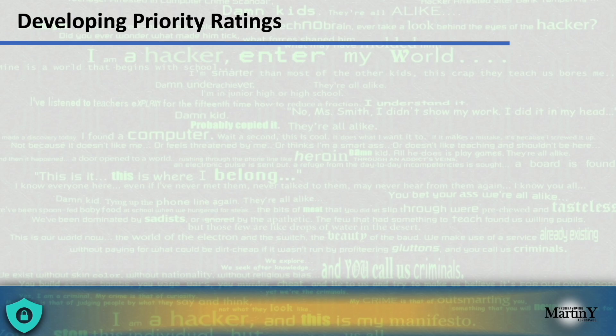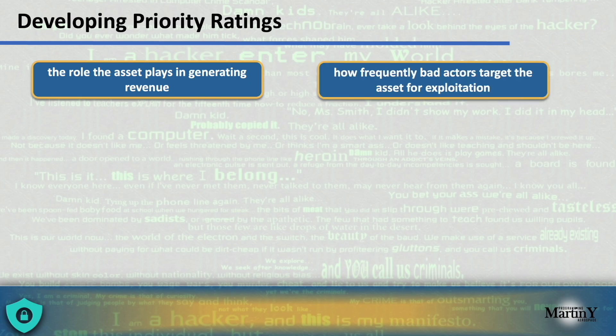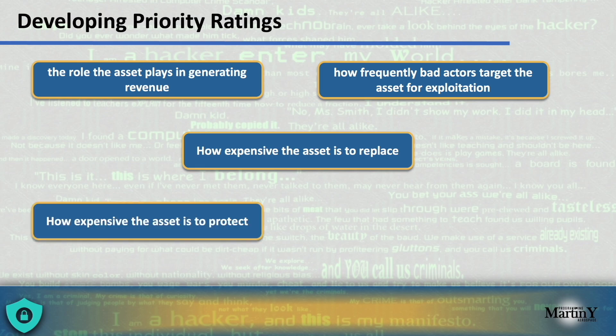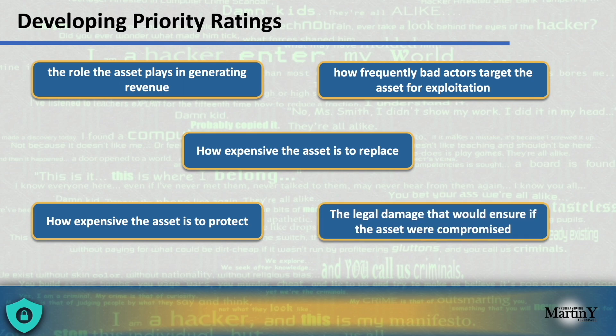The most critical thing is to decide which asset has the most business value. Many components can come into play when determining the ranking of different assets. Some factors to take into account when developing priority ratings include: what role the asset plays in generating revenue; how integral the asset is to current operations; how frequently bad actors target that asset; how expensive the asset would be if it fails; or even how expensive it is to protect. Some assets might not be very expensive, but the value and cost of protecting them could be quite high.